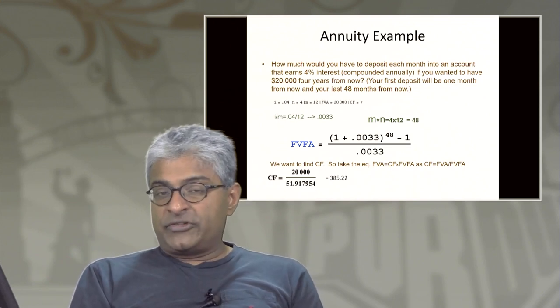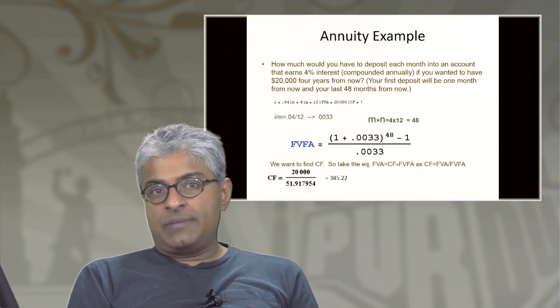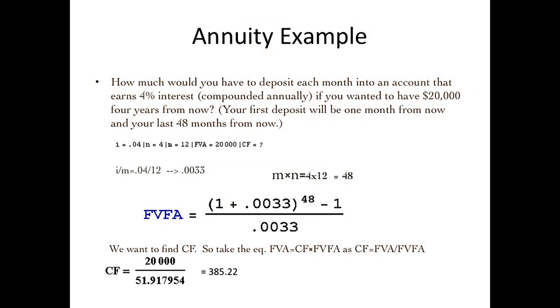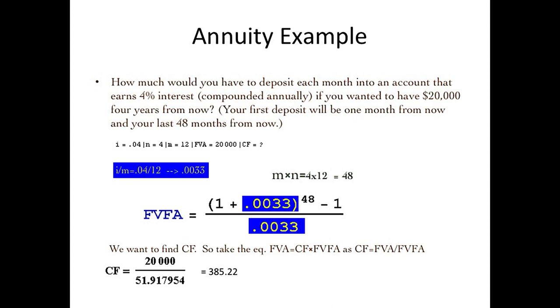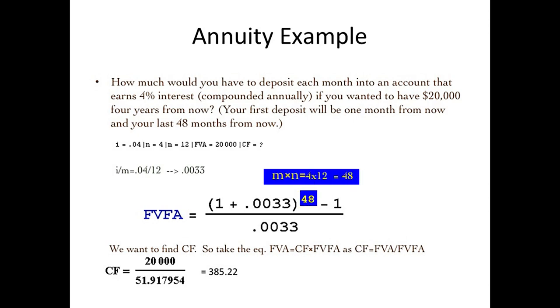But the interest rate that's given to us, the 4% interest, is the annual rate, the APR. So the first thing we have to do is to convert the interest rate into its effective monthly rate, which is simply taking the 4% interest rate and calculating the monthly rate from there, which is 0.04 divided by 12, which will give you the monthly rate.